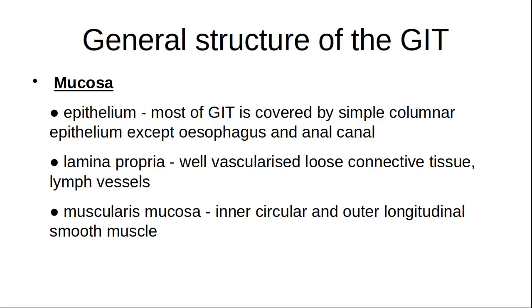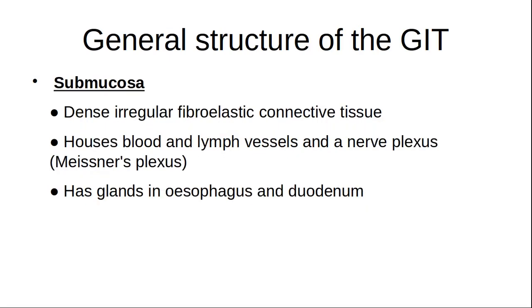The muscular fibers projecting into the lamina propria help with secretions and localized movement of the villi. The submucosa is composed of dense irregular connective tissue containing the usual connective tissue elements, blood and lymph vessels, and glands — for example, the duodenal glands (Brunner's glands) in the duodenum and the esophageal glands proper. An important structure found in the submucosa is Meissner's plexus, which has secretomotor functions to the glands in the submucosa.